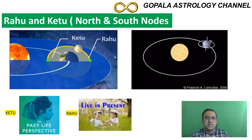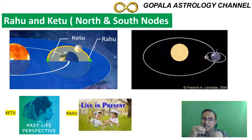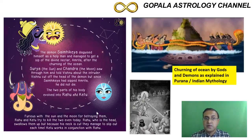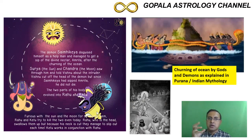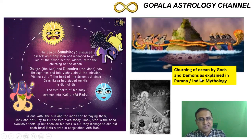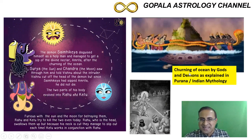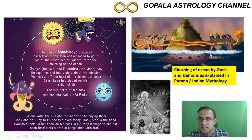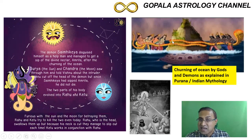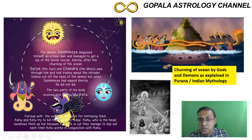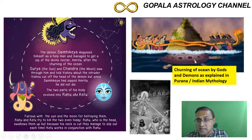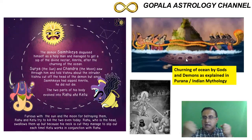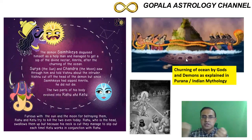Now that we know what Rahu and Ketu are, we can connect them to Kala Sarpa Dosha. The Indian mythology or Puranic stories talk about the churning of the oceans by gods and demons. They used the Vasuki serpent, and there was a Meru Parvatam or mountain supported by Vishnu in the form of a turtle, and the churning of the ocean was done.